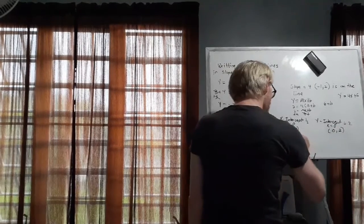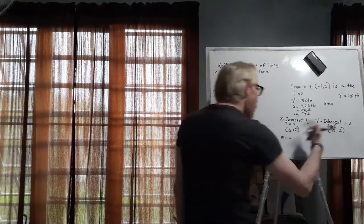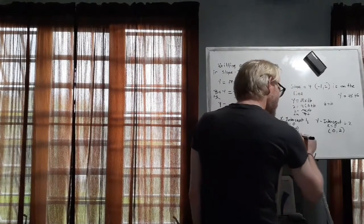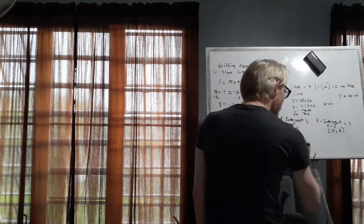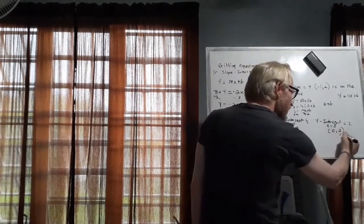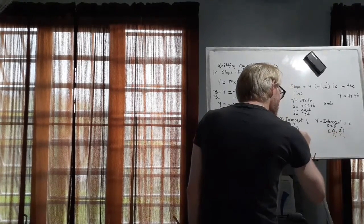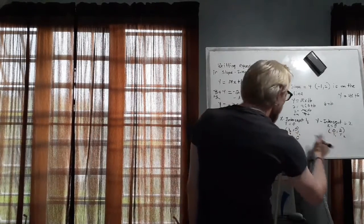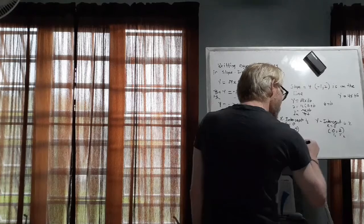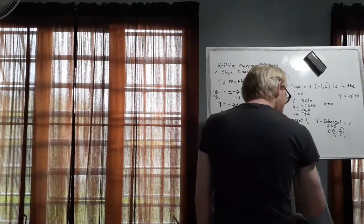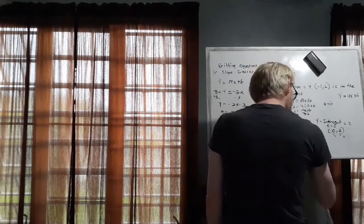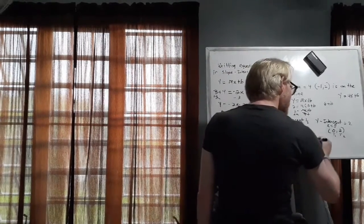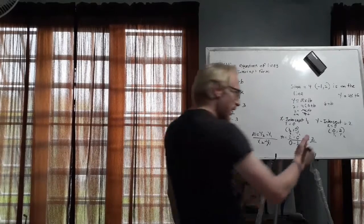y sub 2 minus y sub 1, so 2 minus 0, x sub 2, which is 0, minus x sub 1, which is 1 half. And that's, well, let me write that a little better, sorry for that, 0 minus 1 half. And 2 minus 0 is 2. And 0 minus 1 half is negative 1 half.